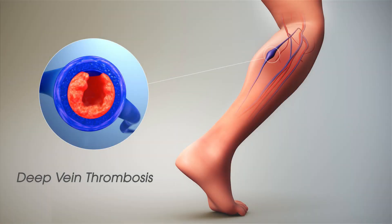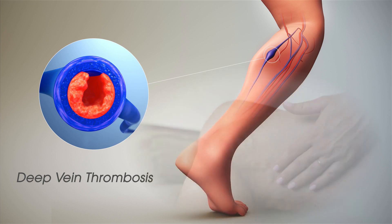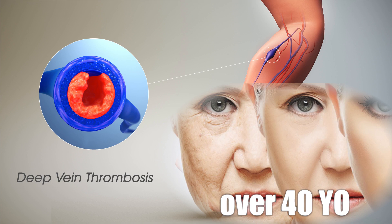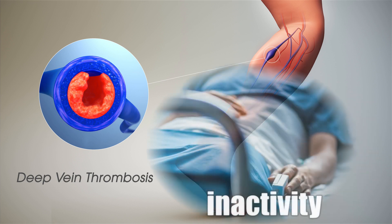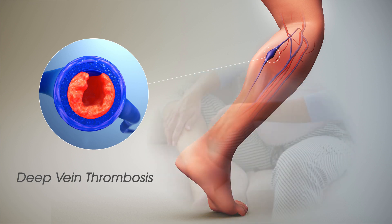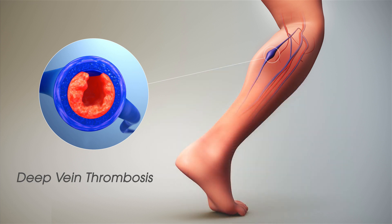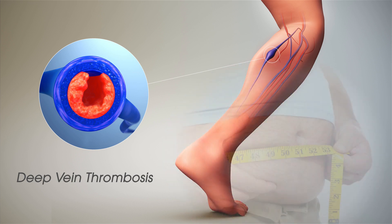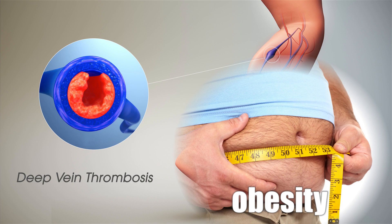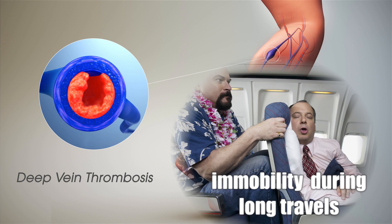Deep vein thrombosis usually affects those who are suffering from varicose veins, those over 40 years old, those who have a family history of deep vein thrombosis or pulmonary embolism, and those who are inactive due to prolonged bed rest after a surgery, paralysis, or stroke. It also affects pregnant women, since increased intra-abdominal pressure may hinder blood flow, those with a previous history of heart attack, conditions that cause abnormal blood clotting, obesity, and those experiencing long periods of immobility via air, car, and train travel.